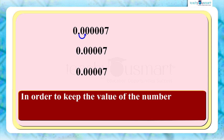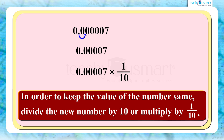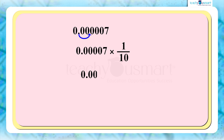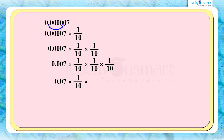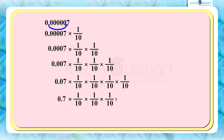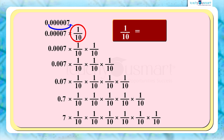Hence, in order to keep the value of the new number the same as the original number, we need to divide the new number by 10, or multiply by 1/10. Repeat the process again — move the decimal point one more place to the right — and we will multiply by 1/10 to keep the value the same. We continue this process until we move the decimal point to the right of the first non-zero number, 7. We know that multiplying by 1/10 is the same as multiplying by 10 raised to minus 1.